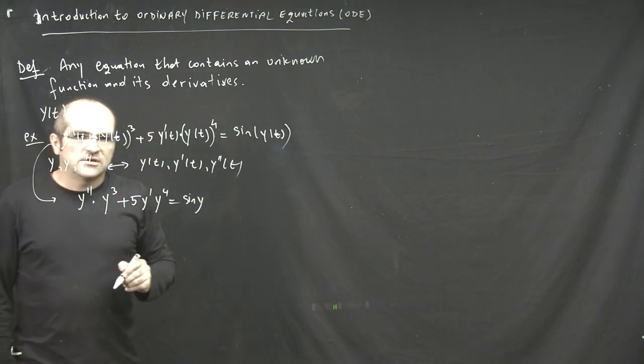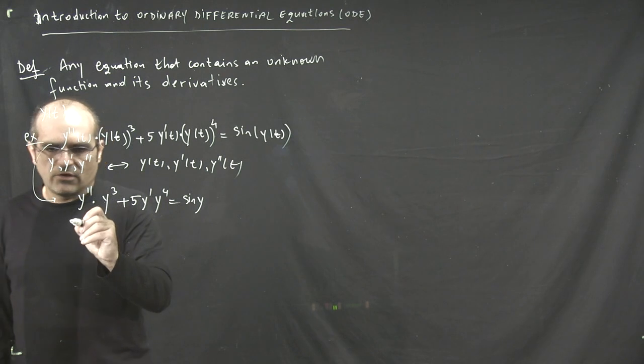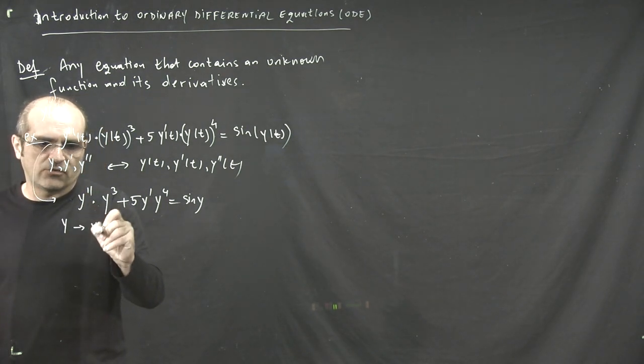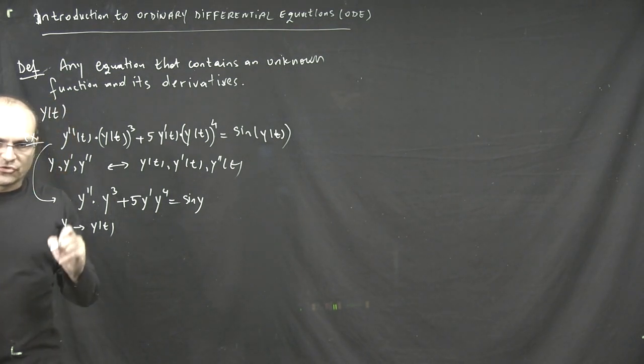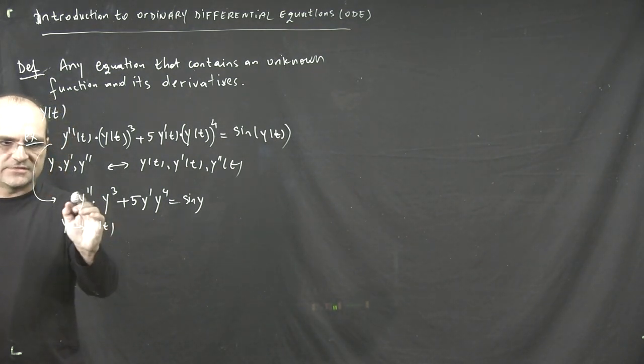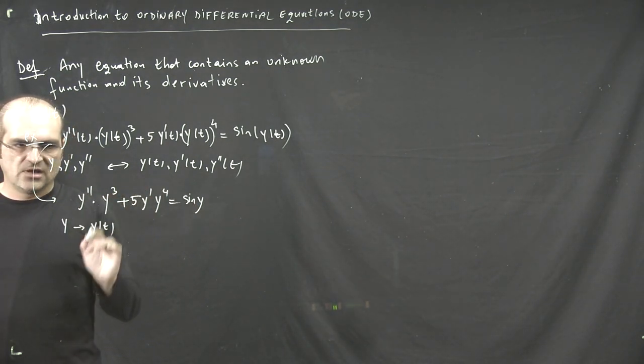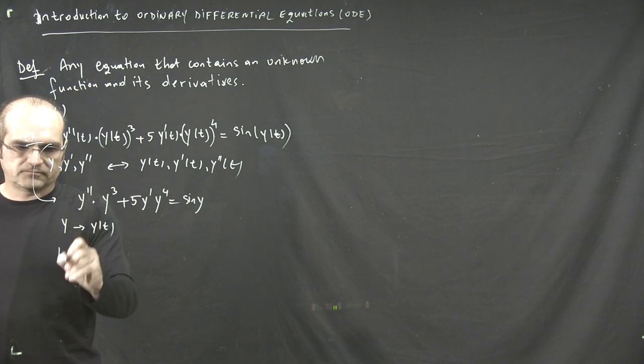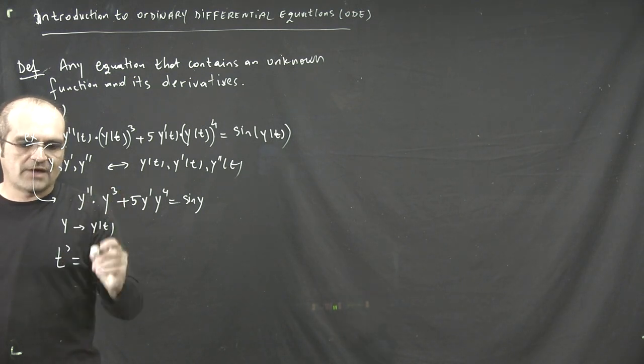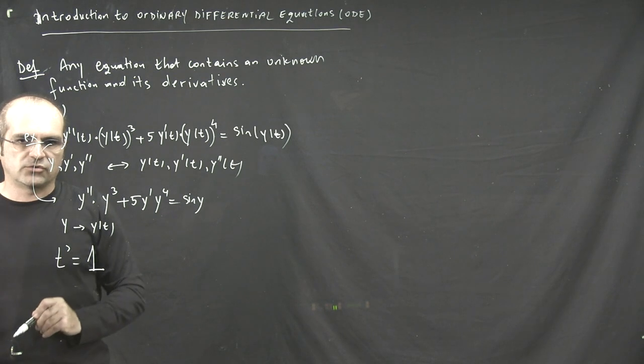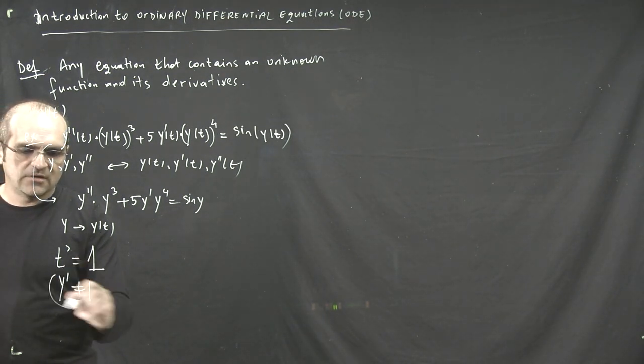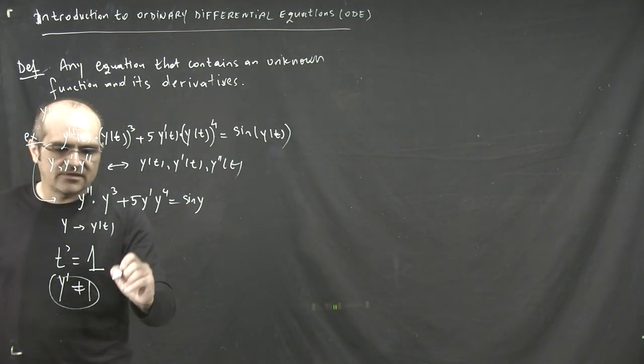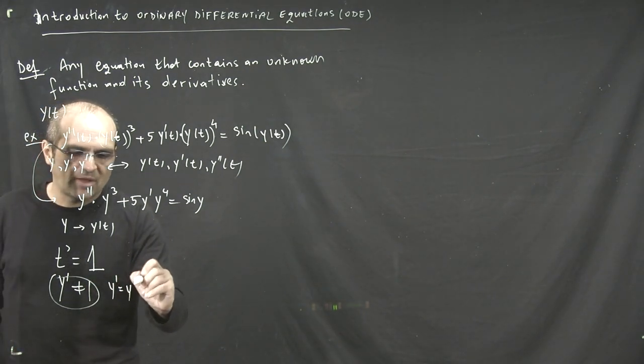So whenever you see y, just assume that it stands for y of t. And obviously, make sure you understand that all the derivatives that appear in the differential equation are with respect to t. So if you have to differentiate t by itself, of course t prime equals 1. But remember, y prime is not going to be equal to 1. Y prime is nothing but a shortcut for y prime of t.